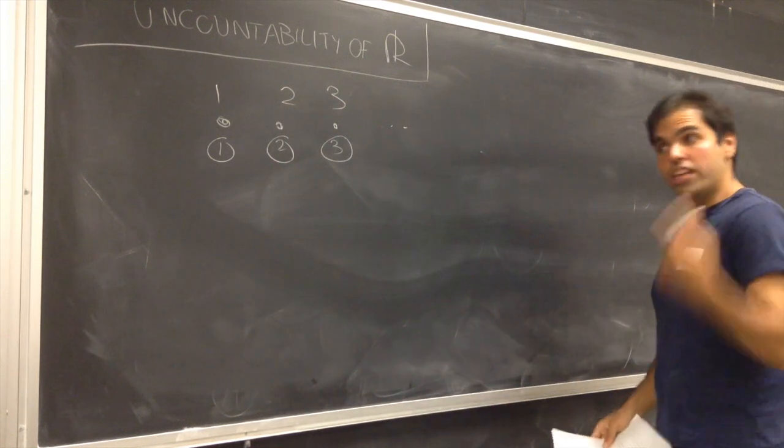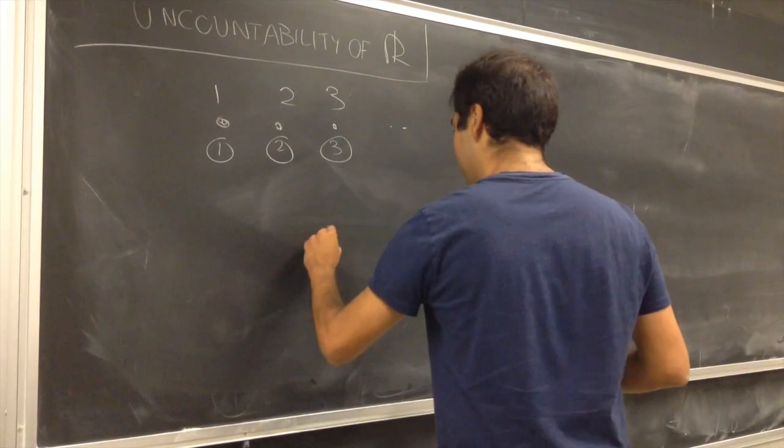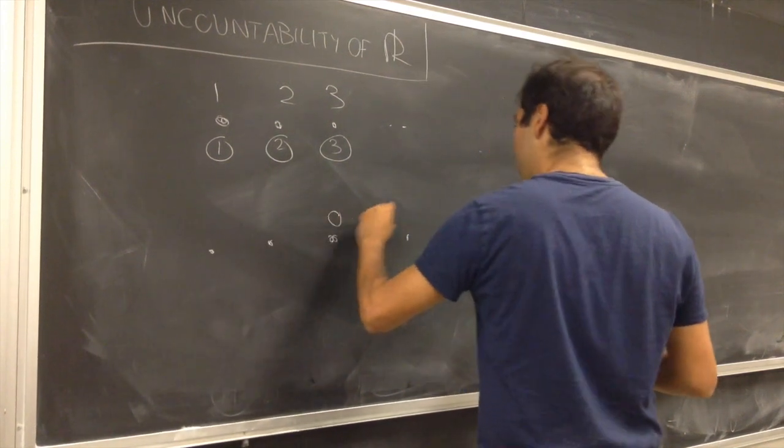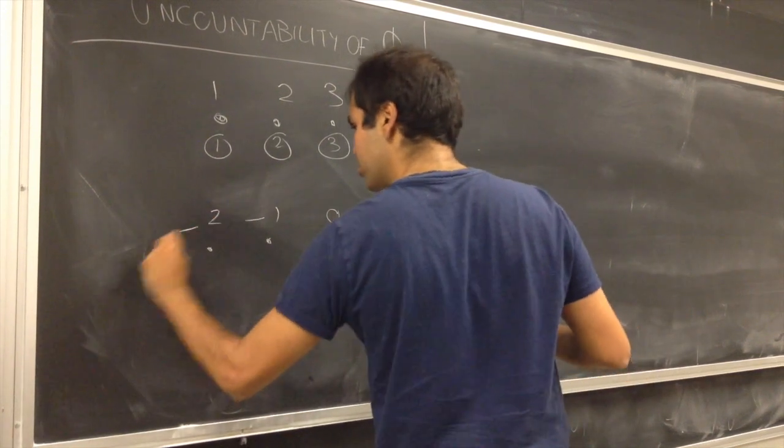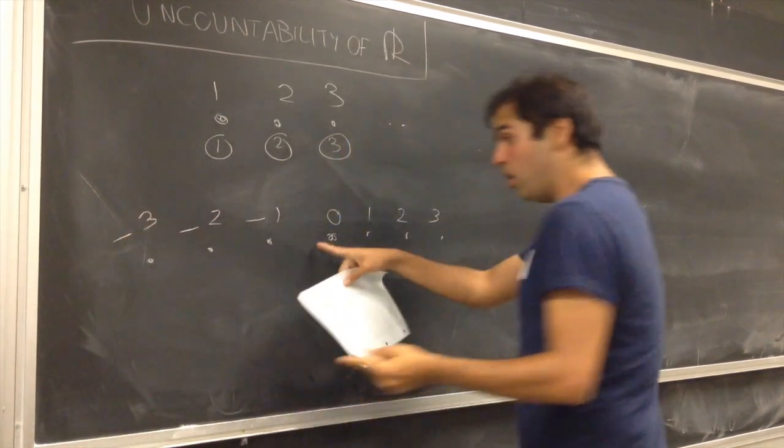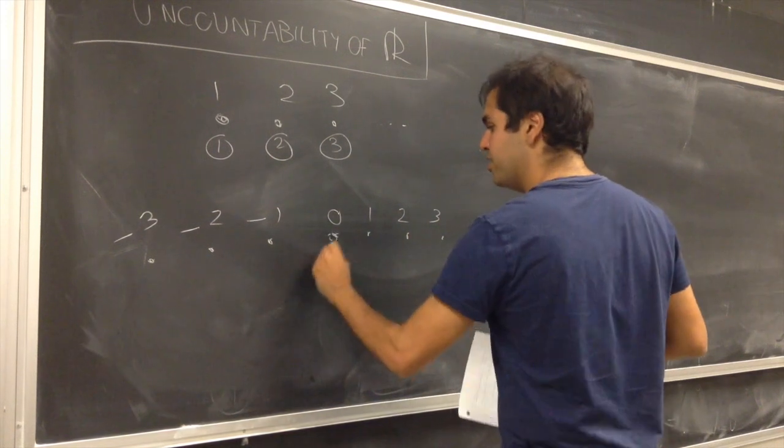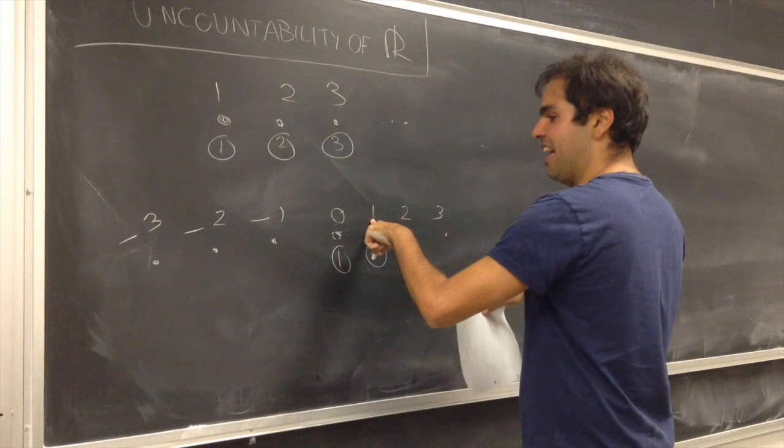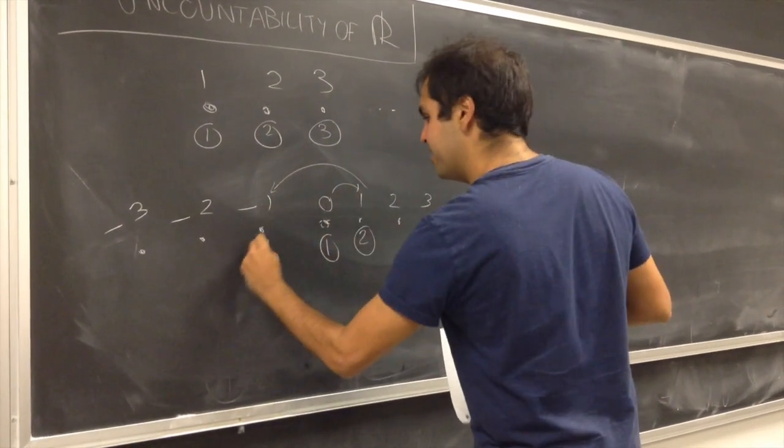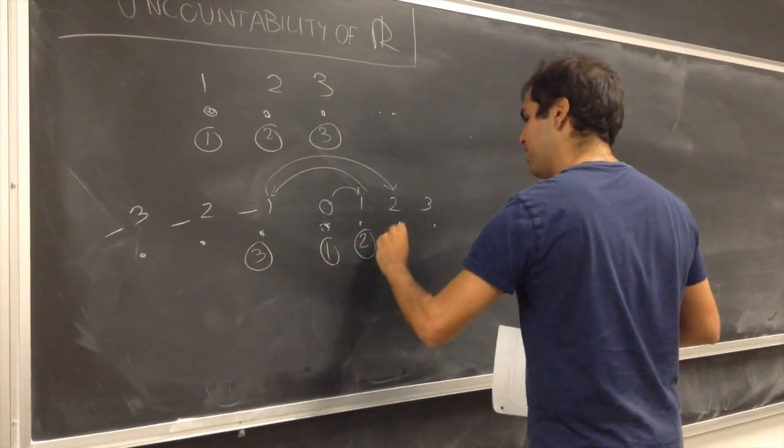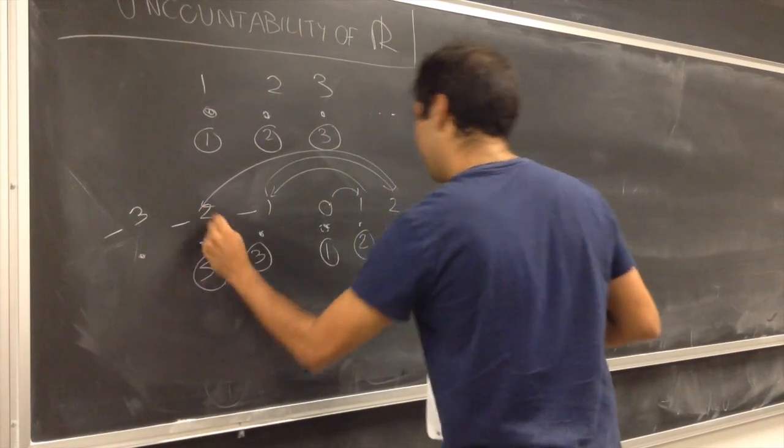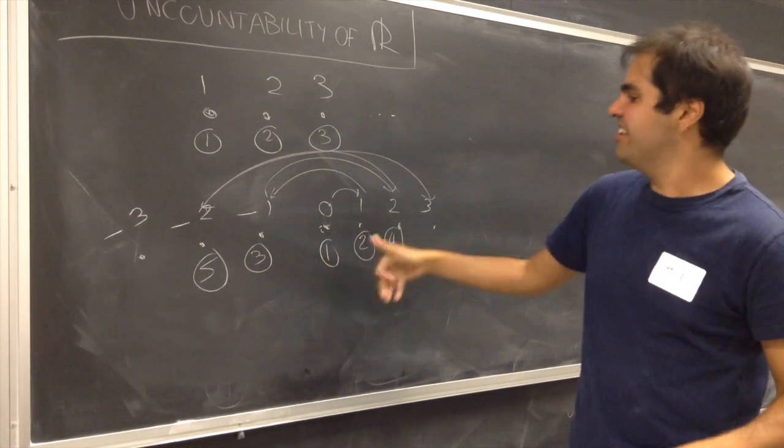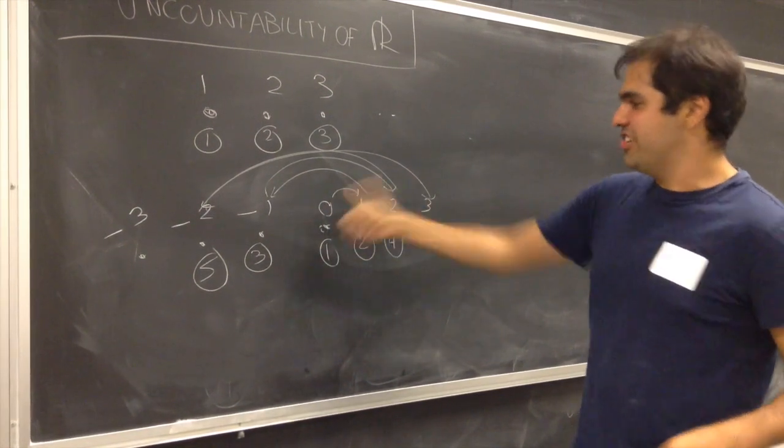It turns out we can also count the integers. So, what if you have something like that? You know, zero, one, two, three, minus one, minus two, minus three. You can also count the real numbers. Because you can associate the number one to zero, then the second element is this, then the third element is this, then the fourth element is this, et cetera. Otherwise, you can, if you want to associate your fingers to each integer.